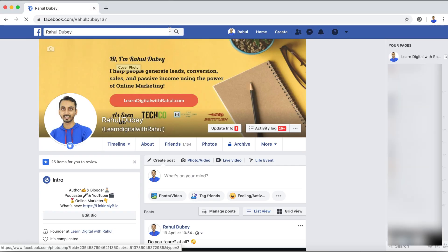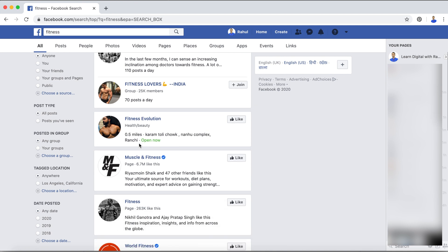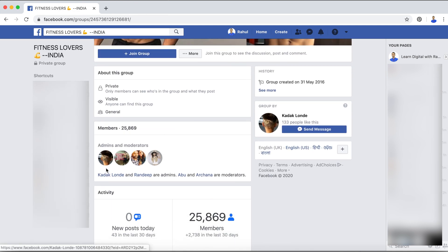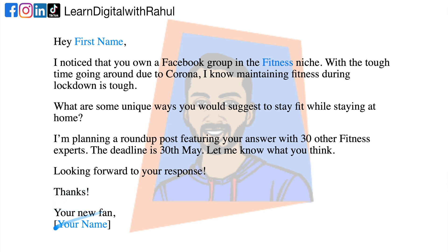Suppose you have a blog in the fitness niche. Simply visit Facebook and search for fitness niche groups — ideally groups with a good number of members and engagement. Once you find such groups, contact the admins and ask a question like: 'Hey [first name], I noticed that you own a Facebook group in the fitness niche. With the tough time going around due to Corona, I know maintaining fitness during lockdown is tough. But what are some unique ways you would suggest to stay fit while staying at home? I am planning a roundup post featuring your answer with 30 other fitness experts. The deadline is 30th May. Let me know what you think. Looking forward to your response. Thanks. Your new fan, Rahul.'